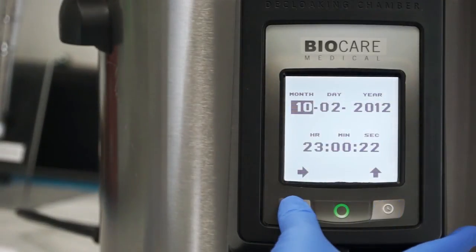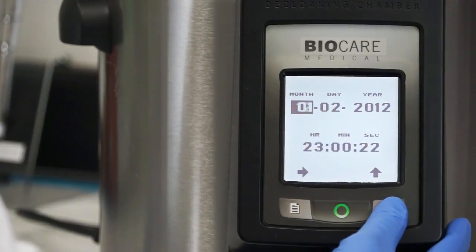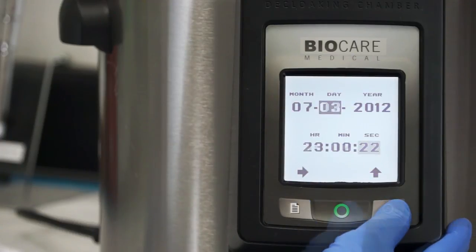Use the buttons under the displayed arrow keys to either increase the value in a selected field or move to the next field. Pushing the green circle accepts the change values.